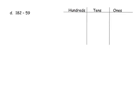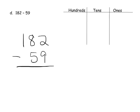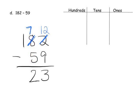Let's practice one more problem. We're going to first write it vertically: 182 minus 59. We look at our ones place — we only have 2, but we need to take away 9. So we're going to have to do some unbundling. I'm going to take one of those tens, leaving us with 7 tens, and cash that 10 in for 10 ones. Now we have 12 ones, and 12 minus 9 gives us 3. Then 7 minus 5 gives us 2, and 1 minus nothing gives us 1. The answer is 123.